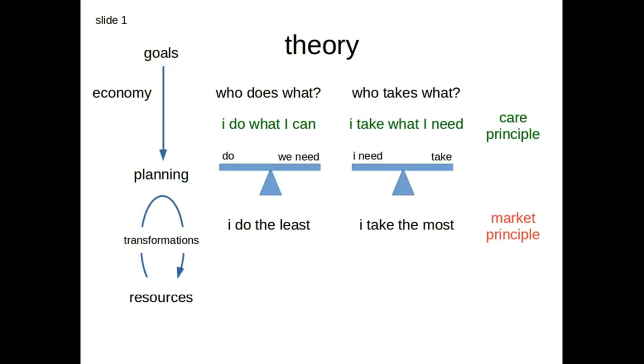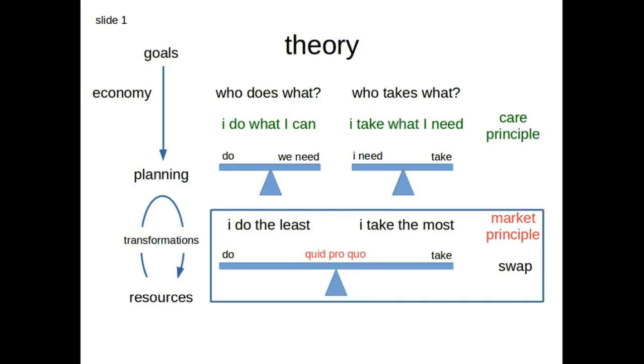Even so much that scarcity arises, and then we need another balance. This is the quid pro quo balance. It's the balance between what I do and what I take. This is why we swap. But when we use the care principle, we share.